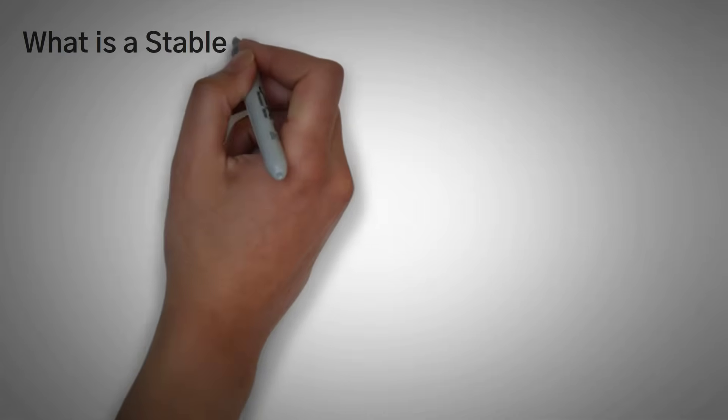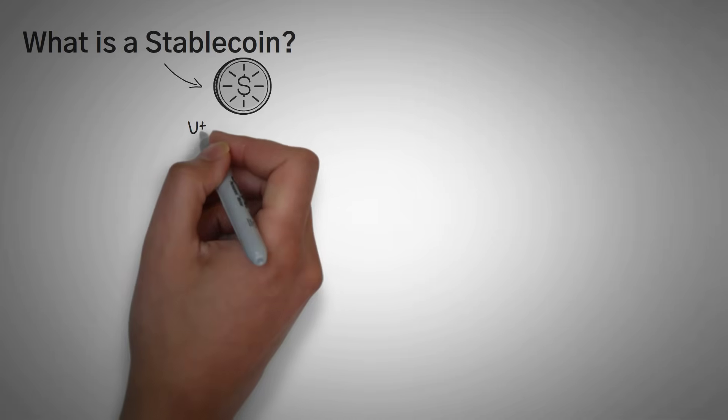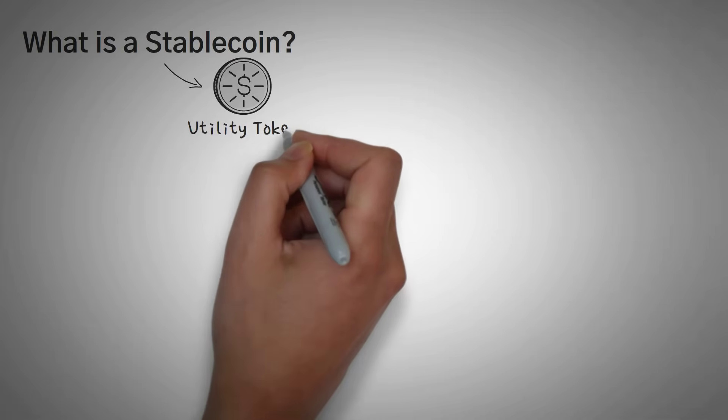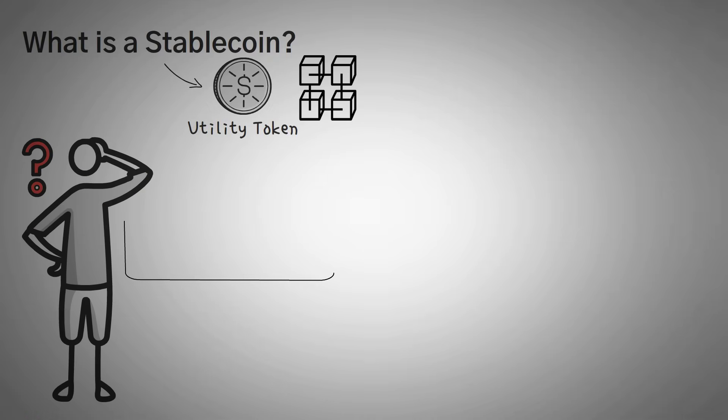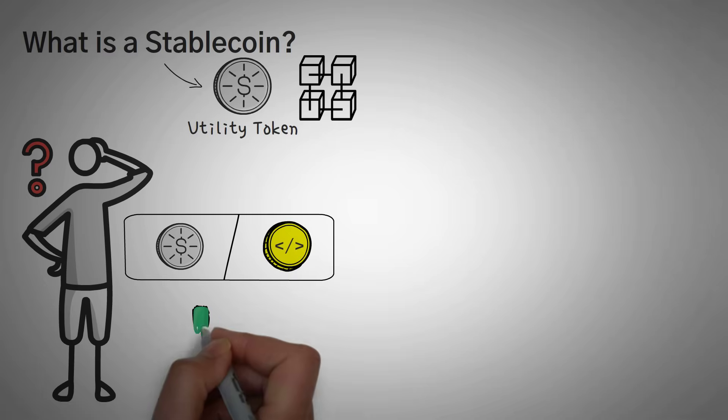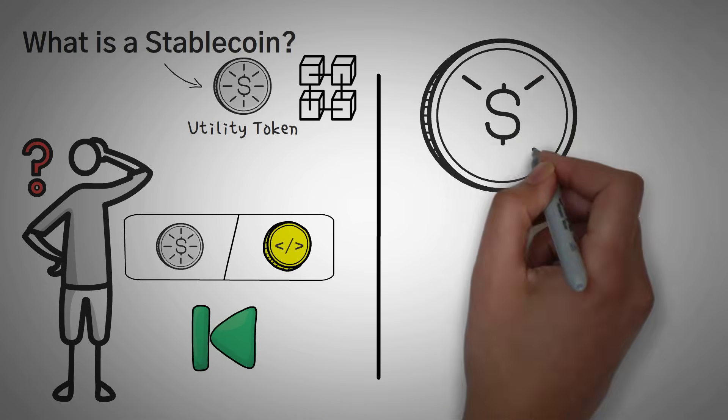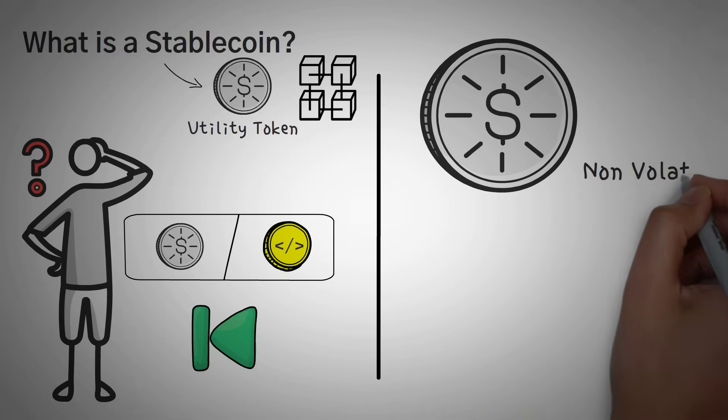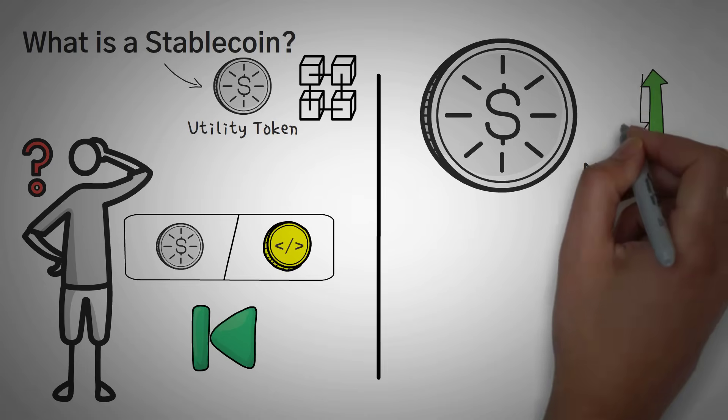First off, what is a stablecoin? A stablecoin is technically a utility token built upon another coin's blockchain. If you don't know the differences between what a coin and a token is, you should definitely check out our video on that topic. But the entire goal of a stablecoin is to create a cryptocurrency that isn't volatile and doesn't change price.